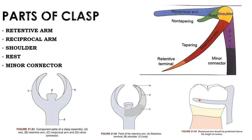The reciprocal arm is used to oppose the action of other parts of the prosthesis. Its functions include: reciprocation against the action of the retentive terminal, stabilizing against horizontal forces, contributing to vertical support and indirect retention. It should be rigid, non-tapering, and positioned on the tooth surface parallel to the denture's path of insertion.